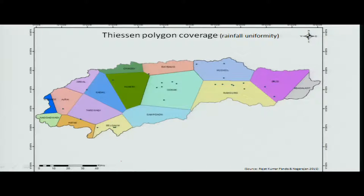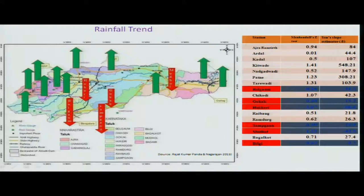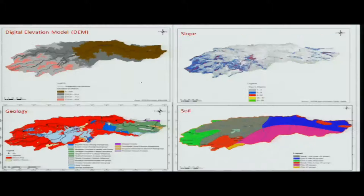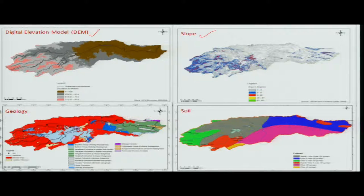We take data from rain gauge stations, create Thiessen polygons, and assess rainfall uniformity and trends. In certain areas the rainfall trend is increasing, while in others it is decreasing. The digital elevation model shows slopes and helps identify potential areas for more agriculture. Geology is used for aquifer assessment, and soil data is used for infiltration studies as well as determining the suitability of crops.